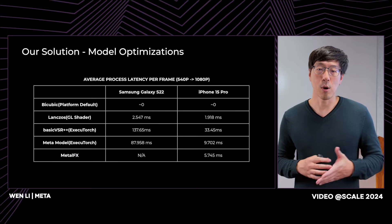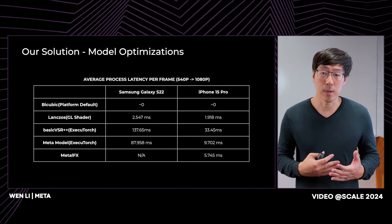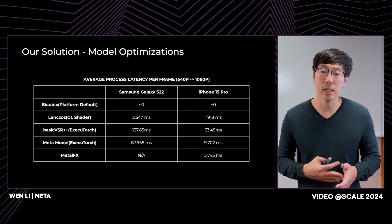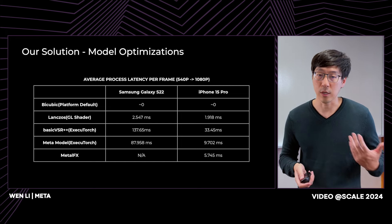Here are benchmark results on Samsung and iPhone devices with different algorithms and models. Lanczos is implemented in an OpenGL shader. BasicVSR++ and Meta's own deep learning model are implemented in ExecuTorch. Metal FX is Apple's native video super-resolution solution. Lanczos has very low runtime, making it feasible for real-time video playback. Both Meta's model and Apple's Metal FX can finish processing under 10 milliseconds per frame, leaving room to use these models when certain conditions are met.